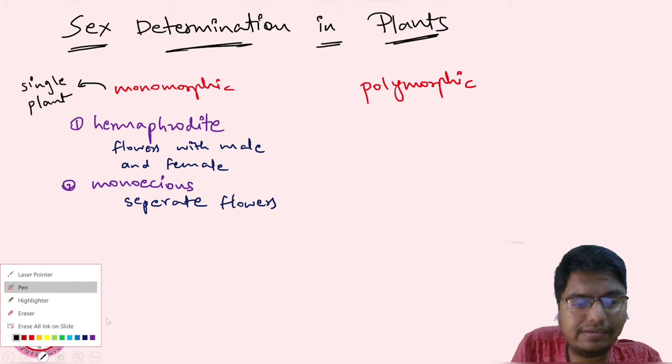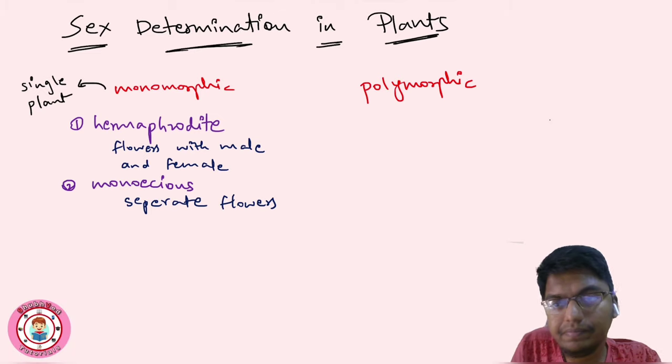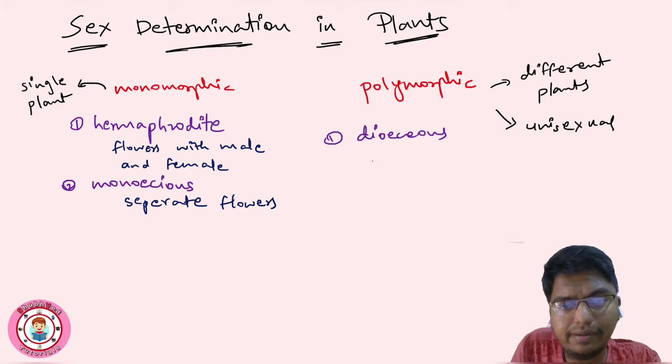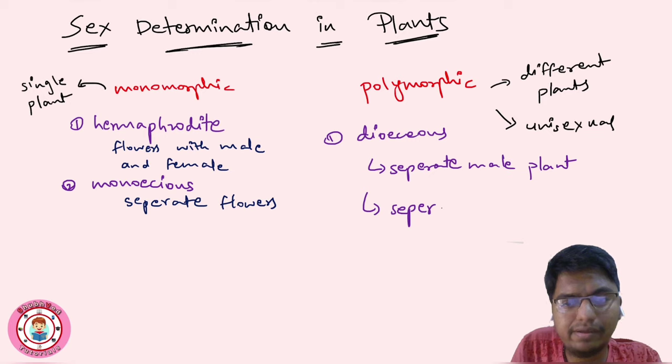Different plants, we can also say unisexual, and this is also known as dioecious. In dioecious, there is separate male plant and separate female plant. Male plant is separate, female plant is separate.